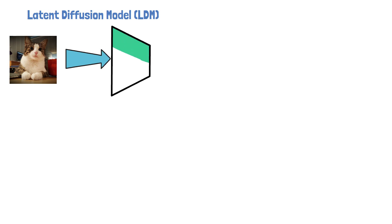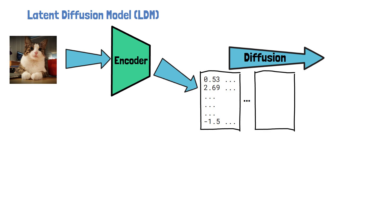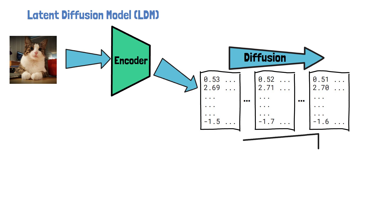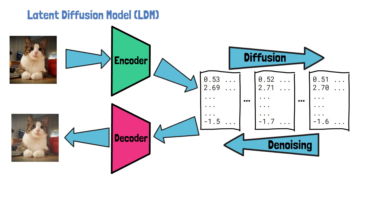Consistency models can help reduce the latency of generating images. However, another challenge when working at the pixel level is generating high quality images. This brings us to latent diffusion models, or LDMs, which operate in a latent space that is smaller than the pixel space. To train a latent diffusion model, we take a clear image and first pass it through an encoder. The encoder yields a representation in the latent space that preserves the image semantics. Then the diffusion process happens in the latent space, where noise is gradually added to the image representation. The model learns to remove noise in the latent space, and the final representation after denoising is passed through a decoder that yields the result in pixel space. Doing most of the work in the latent space makes the process more efficient and allows generation of high quality images.